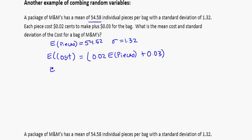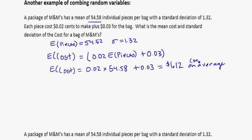So the mean cost will be equal to 0.02 times the mean number of pieces which is 54.58 plus the 3 cents that they need for making the bag. That's a total of $1.12 on average cost on average per bag of M&Ms.